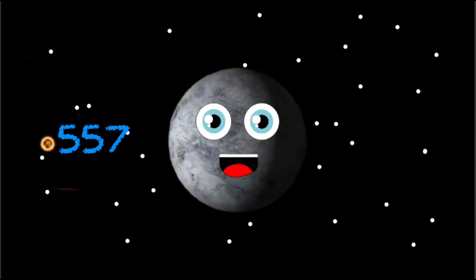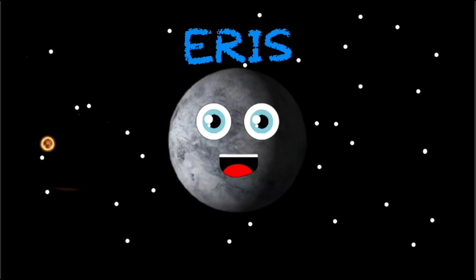I take 557 Earth years to orbit the sun. When I orbit, I leave the Kuiper belt on my run. My name is Eris. I am a dwarf planet, the furthest dwarf from the sun the humans found yet.